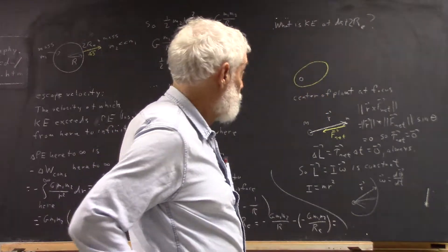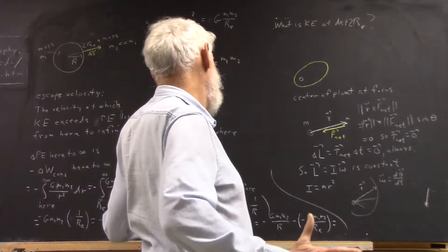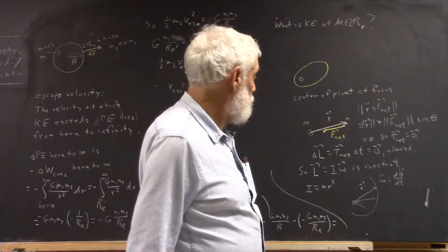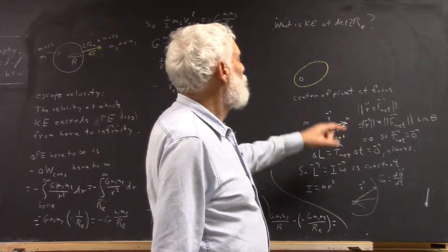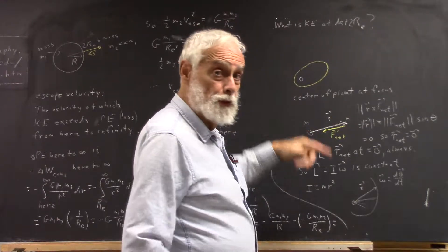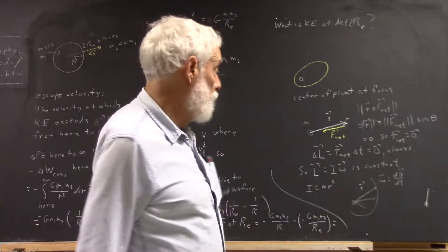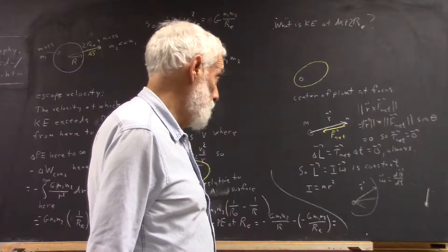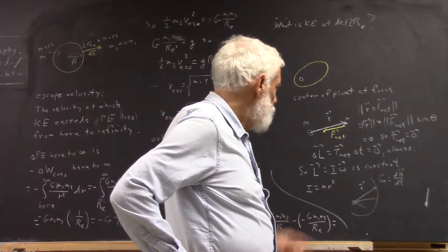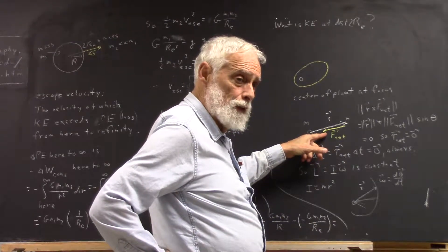The center of the planet is at the focus of this elliptical orbit. I'm going to say that no matter where a mass is, the torque exerted by the gravitational force, which is the only force acting on an orbiting mass, assuming it's far enough out that it's not interacting with the atmosphere or anything else, the torque exerted by this force is zero.